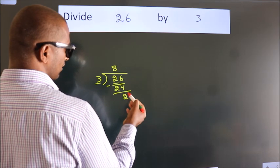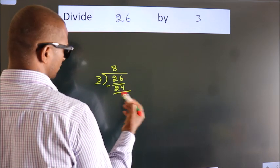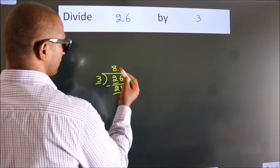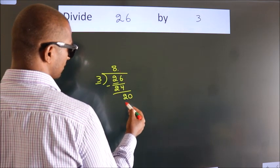After this, no more numbers to bring it down. So what we do is we put dot, take 0. So 20.